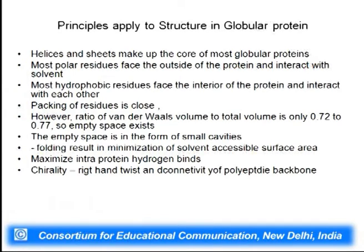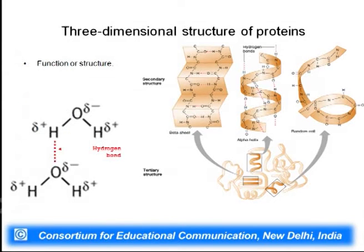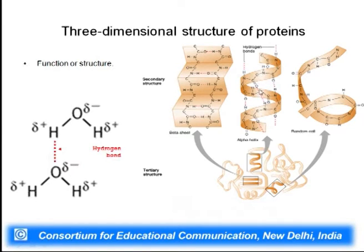There is a tendency to have a maximum number of intramolecular hydrogen bonds, and we will see how all these principles apply to protein folding from the primary to the tertiary structure. The tertiary structure has beta sheets, alpha helices, and turns with hydrogen bonding as the most important interaction. A hydrogen bond forms with partial charges at hydrogen and oxygen — because of the electronegativity of oxygen, its lone pair of electrons attracts the hydrogen. Hydrogen bonds in the secondary structure were formed between backbone carbonyl and NH groups.